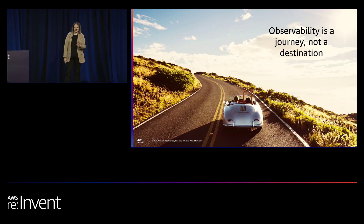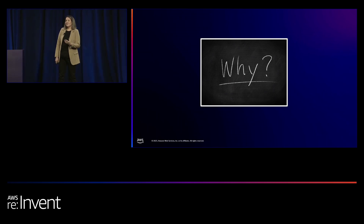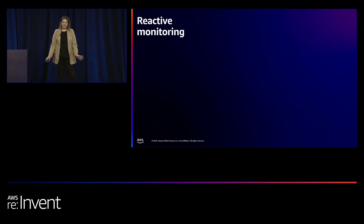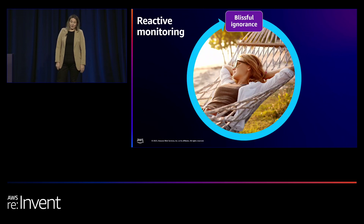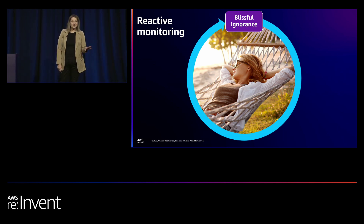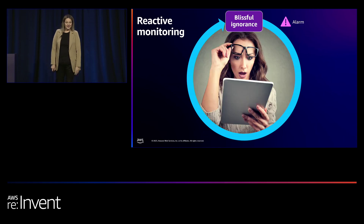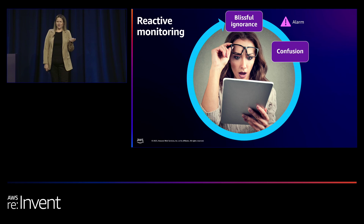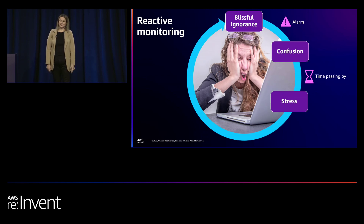Now that you know where you are and where you want to be, let's talk about why an effective observability strategy is really important. Let's start with a pretty representative day for many users — tell me if this resonates. You come into the office with blissful ignorance, thinking this week you're going to get the backlog done. But then an alarm comes in, and you're confused — the incident was last week, what's wrong now? Time starts passing and unfortunately that leads to stress.